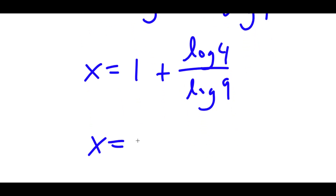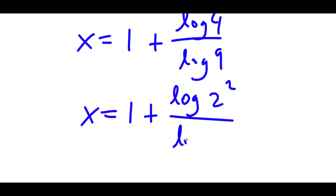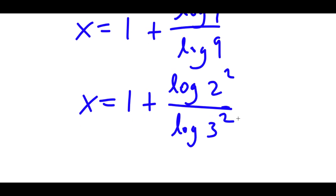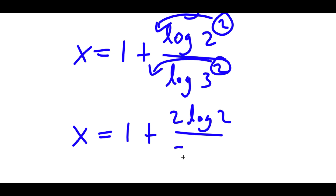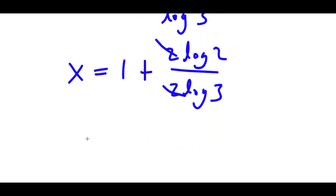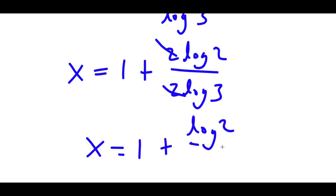Log 4 is the same thing as 2 squared, so I get 1 plus log of 2 squared over log 9. And 9 is 3 squared, so log of 3 squared. Remember, if I have something in the form log a to the power of b, I can move b to the front. So now I have x is equal to 1 plus 2 log 2 over 2 log 3. These two 2's cancel out, so I get x is equal to 1 plus log 2 over log 3.